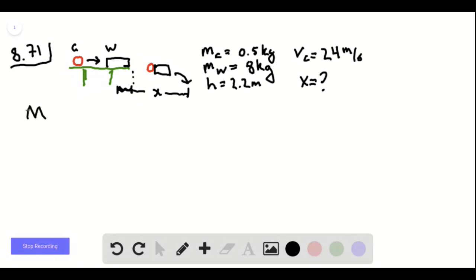So if we call capital M the mass of both the clay and wood combined, and we call our speed we're looking for here v, you can call it v sub x if you like.